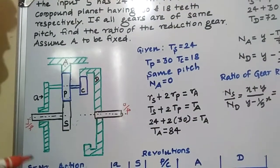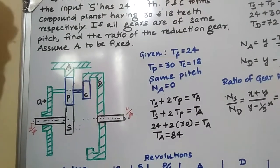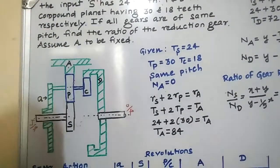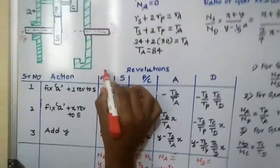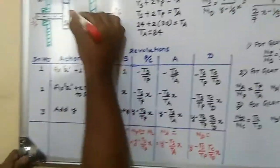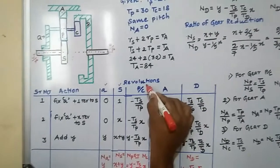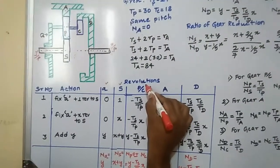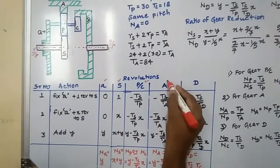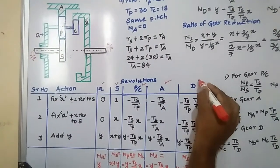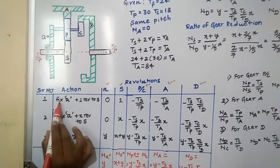First, you have to create a table. For creating a table, you have to identify all the gears or elements. I have taken the arm as A, sun gear as S, P and C as the compound gear train — that is why I have taken them at the same speed, written as P/C. Then annulus gear A, and one more gear D. Then for operations, I will take some actions.